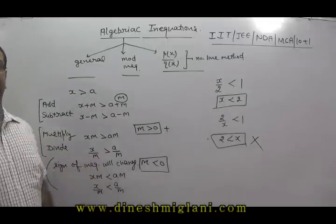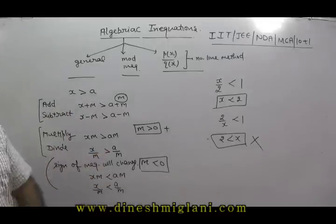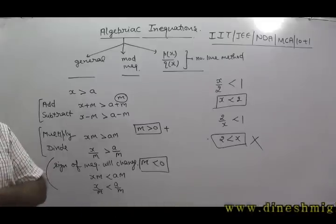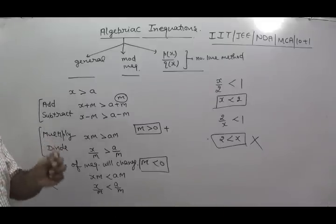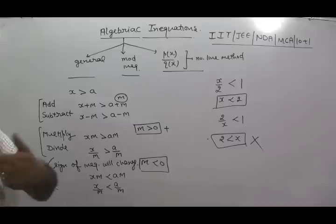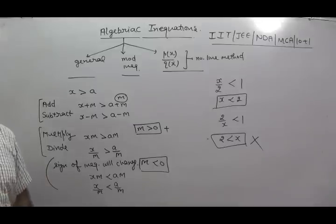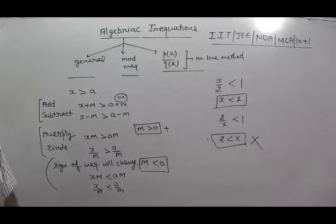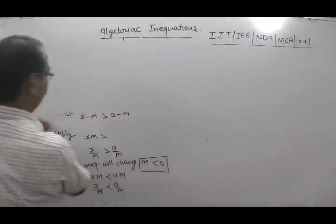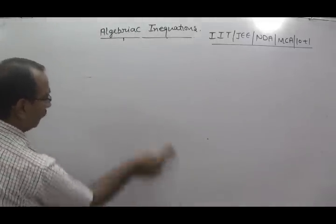In questions of inequality, if you have to multiply or divide by a constant number, you should know the sign of that number. If it is positive, without any problem you may multiply — the sign of inequality will not change. But if that number is negative, the sign of inequality will change. Let us take one or two problems so that you will get the idea.